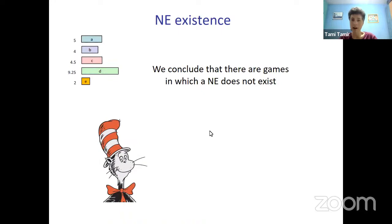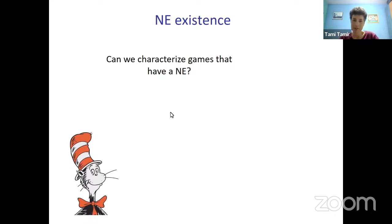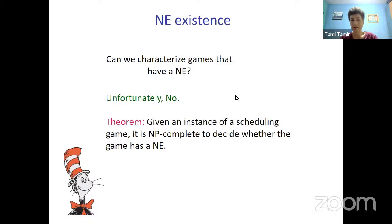We conclude that there are games in which Nash equilibrium does not exist. This is a problem: if Nash equilibrium is not guaranteed to exist, best response dynamics is not guaranteed to converge, and we cannot analyze the equilibrium inefficiency. Moreover, it is NP-complete to decide whether a game has a Nash equilibrium. Given an instance of the game, there is no efficient way to decide whether Nash equilibrium exists.